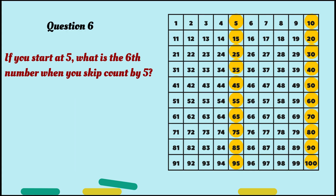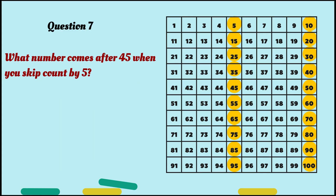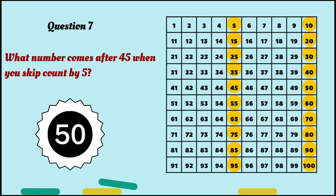If you start at five, what is the sixth number when you skip count by five? I'll say it out for you — five, ten, fifteen, twenty, twenty-five, thirty. The answer is thirty. Yes! Next question: What number comes after forty-five when you skip count by fives? Yes, it's fifty. Awesome job.